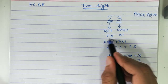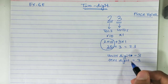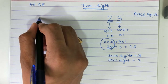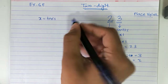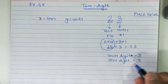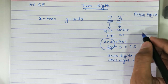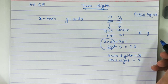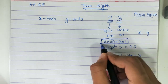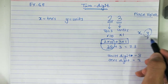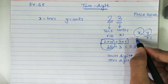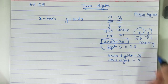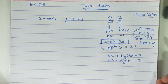In these problems we always take the tens digit as x and the units digit as y. So the tens digit is x, the units digit is y. The value of the number is calculated by multiplying the units digit by 1 and the tens digit by 10, which gives us 10x plus y.